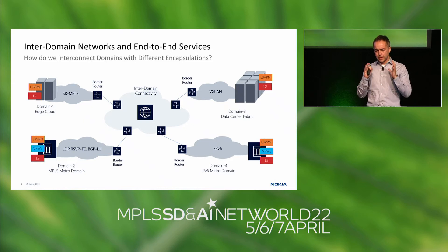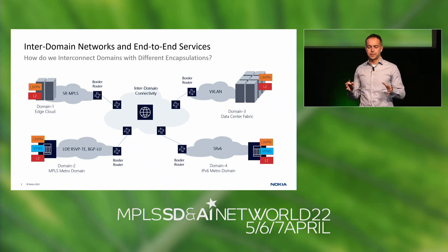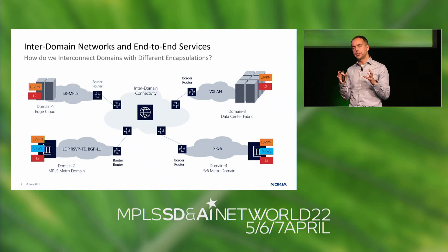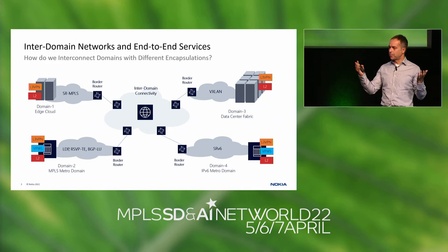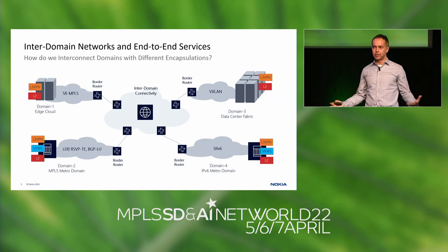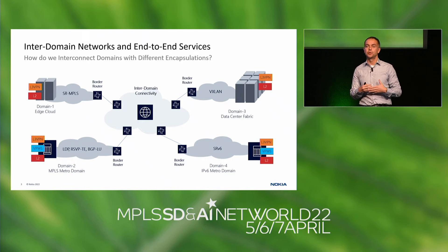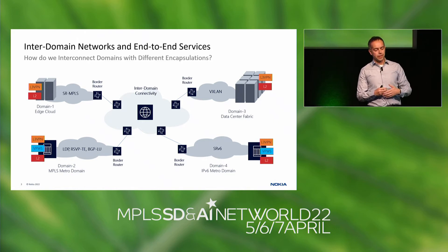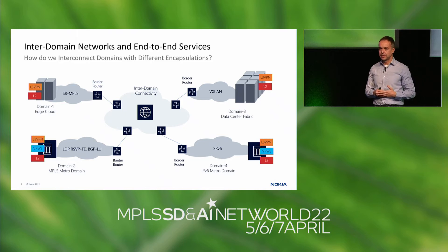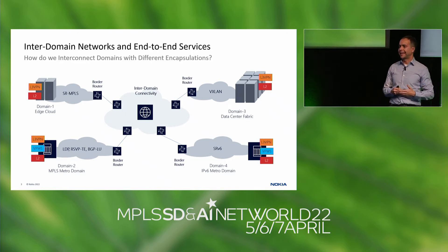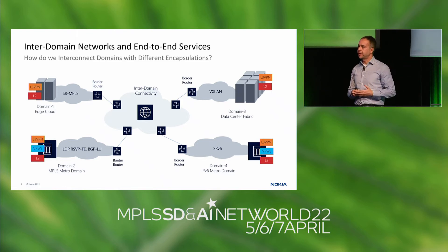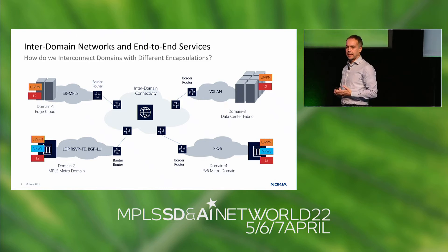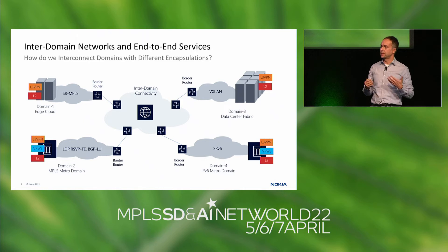Throughout this presentation, a domain is going to be like an IGP instance, or an autonomous system, or sometimes a superset of both. Suppose you have operator A and operator B — they merge together, bring all their network complexities, and have different domains. So you end up with domain one which is SRMPLS-based, domain two maybe traditional LDP or RSVP-TE based, domain three may be a data center with VXLAN tunnels, and domain four is a brand new SRV6 domain.